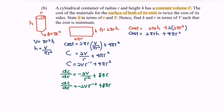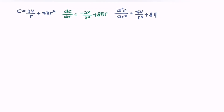Next, we find the second derivative: d²C/dr² = 4V/r³ + 8π. Step three: find the critical value by setting dC/dr = 0. Substituting: 0 = -2V/r² + 8πr.